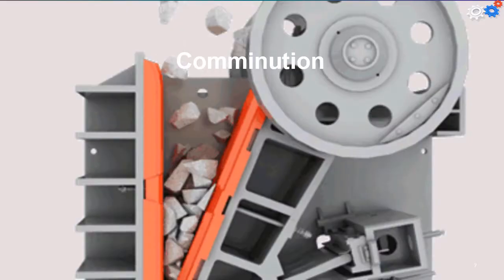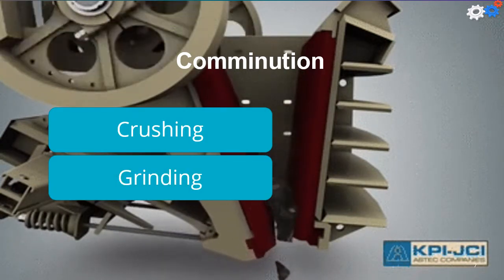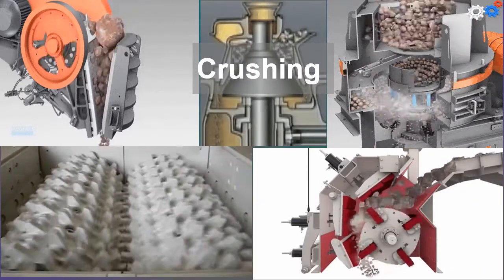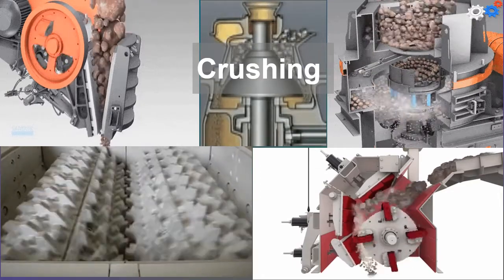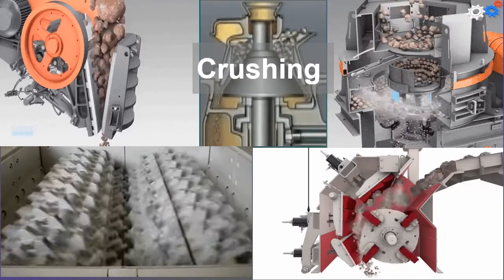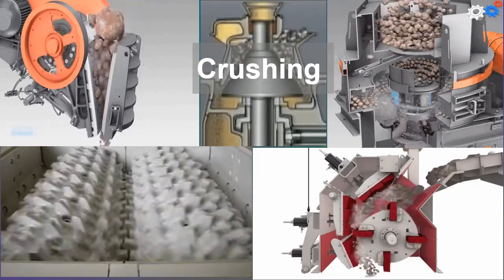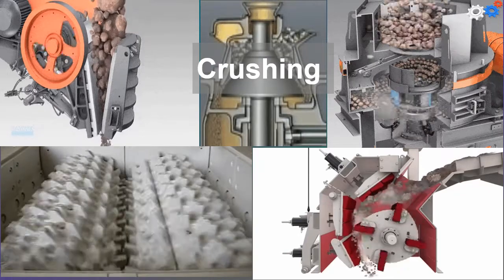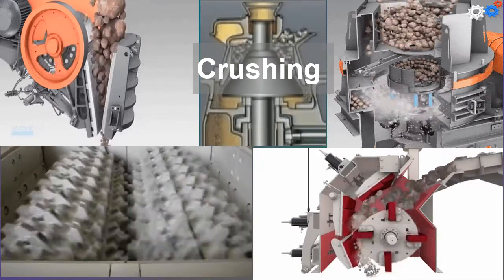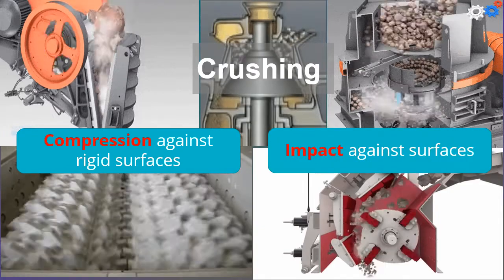The two general types of comminution operations are crushing and grinding. Crushing is a reduction of large lumps from the mine to smaller sizes for subsequent further reduction. Several stages may be required, such as primary crushing or secondary crushing, with a size reduction ratio of three to six times per stage. Crushing is accomplished by compression against rigid surfaces or impact against surfaces.